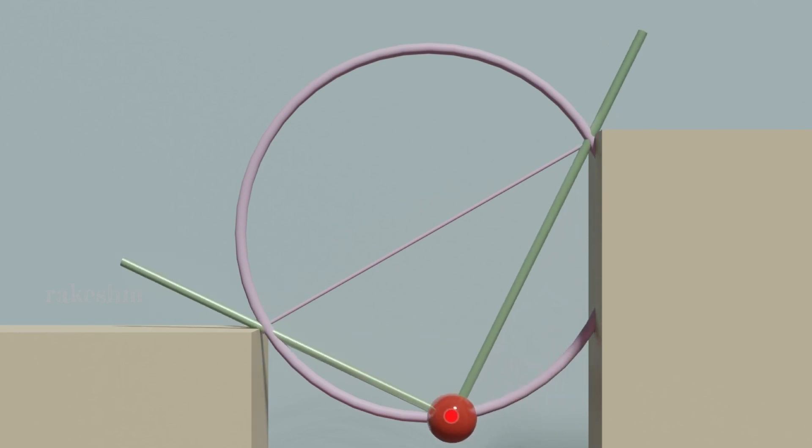Now this structure will come to rest where the potential energy of this structure is the least. The potential energy will be least when this bead is at the lowest point. We can say the lowest point on this circle is the point where the tangent to the circle is horizontal.